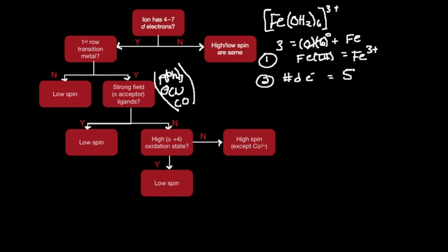Now, here the ligands are water, so the answer to this question strong field ligands is no. If the ligands were say carbonyls, then the answer would be yes, and it would automatically be low spin. So the answer is no, because the ligands are water, so we go to, is this a high oxidation state? And by high oxidation state, we mean the charge on the iron is greater than or equal to four. Well, no. The charge is three plus, so it's not greater than or equal to four, so no. So we're going to choose this as being high spin. This is high spin.